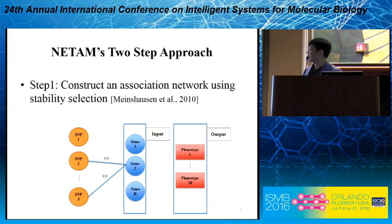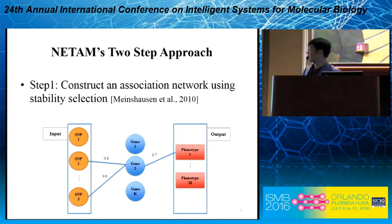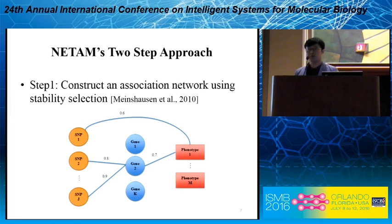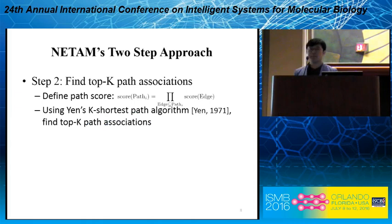We then consider the set of genes as input and the set of phenotypes as output, and again find the association between them. Finally, we also find associations between the set of SNPs and set of phenotypes. So now we have an association network where nodes represent SNPs, gene expression traits, and phenotypes, and edges represent associations between a pair of nodes. In the second step, we find the top K path associations. To do so, we first define a path score, which is simply the multiplication of the scores on edges in the same path. Then, using Yen's K shortest path algorithm, we find the top K path associations.